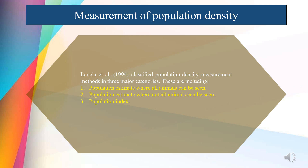In removal sampling, the number of organisms removed from an area in successive samples is plotted on the y-axis of a graph, whereas the total number previously removed is plotted on the x-axis. If the probability of capture remains reasonably constant, the points will fall on a straight line that can be extended to the point on the x-axis that would indicate the theoretical 100% removal from the area.